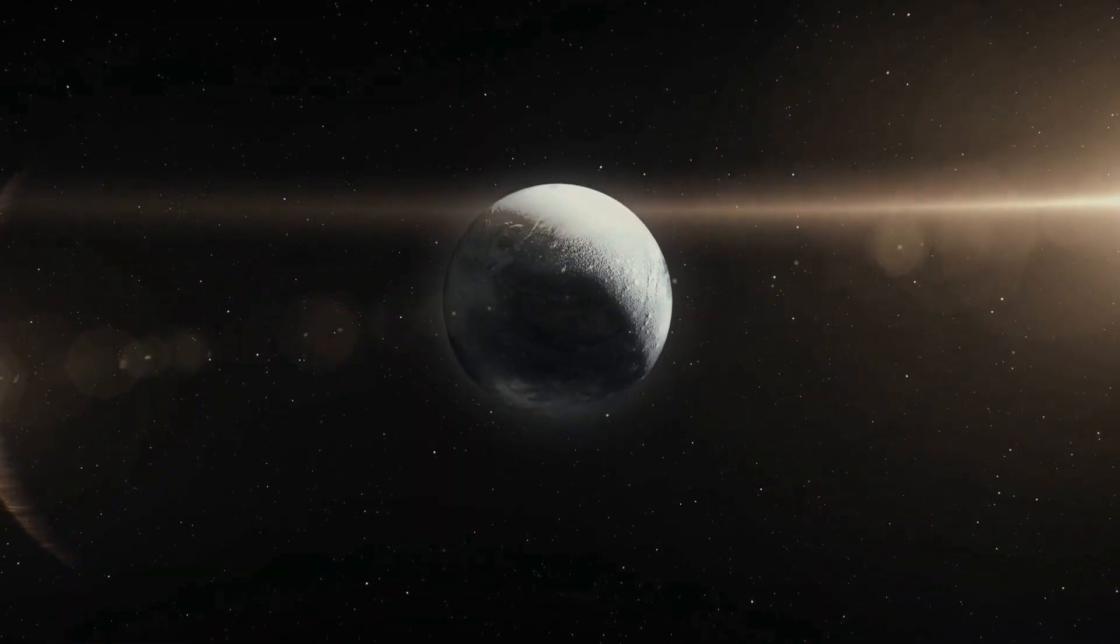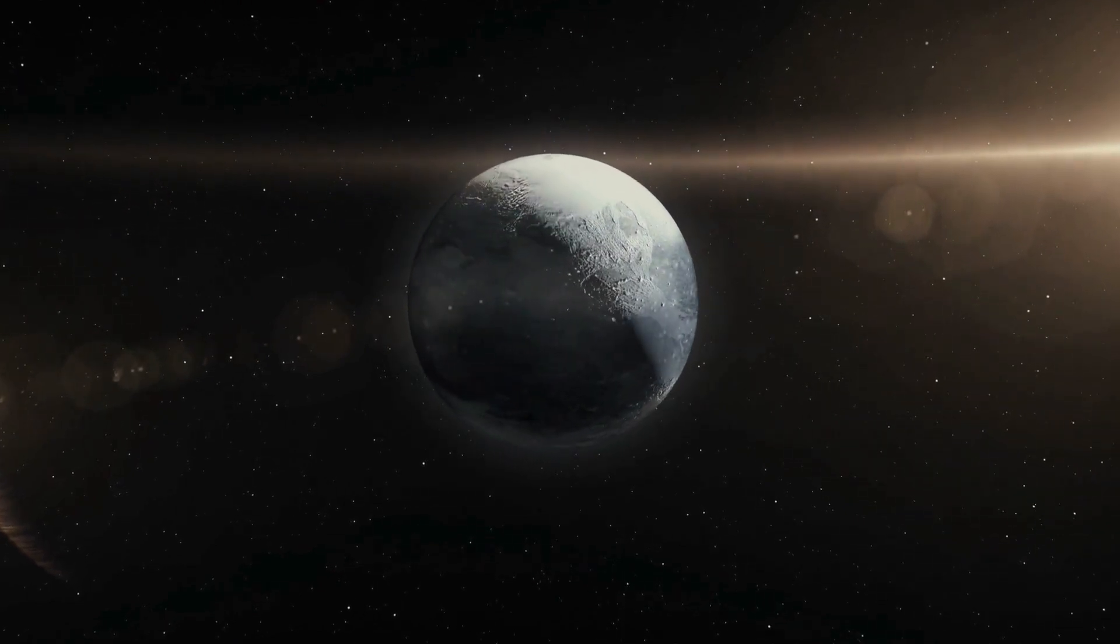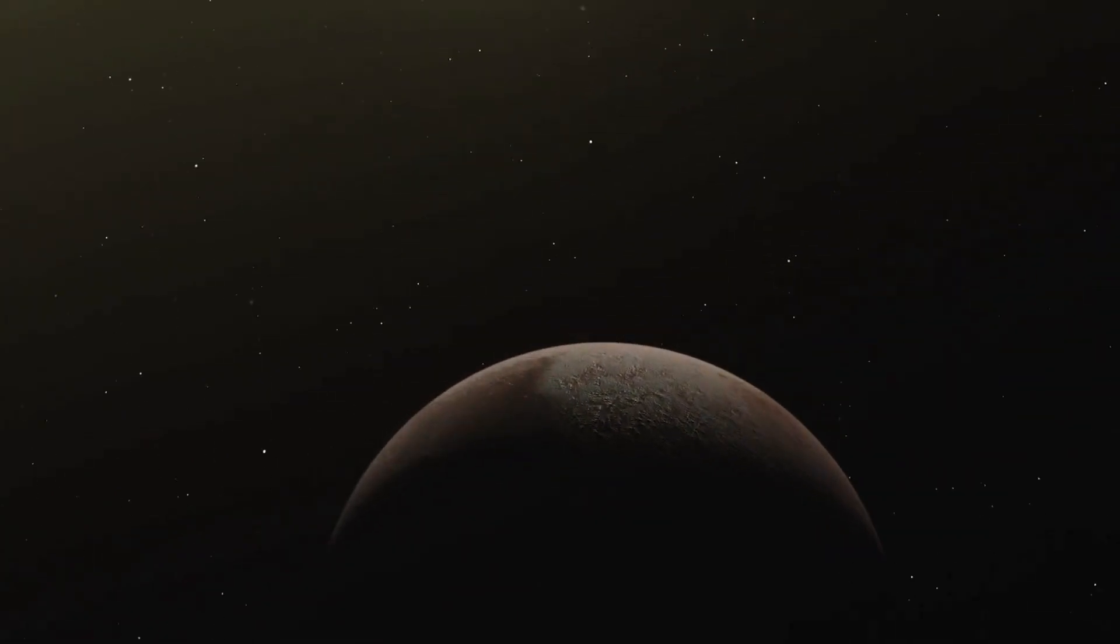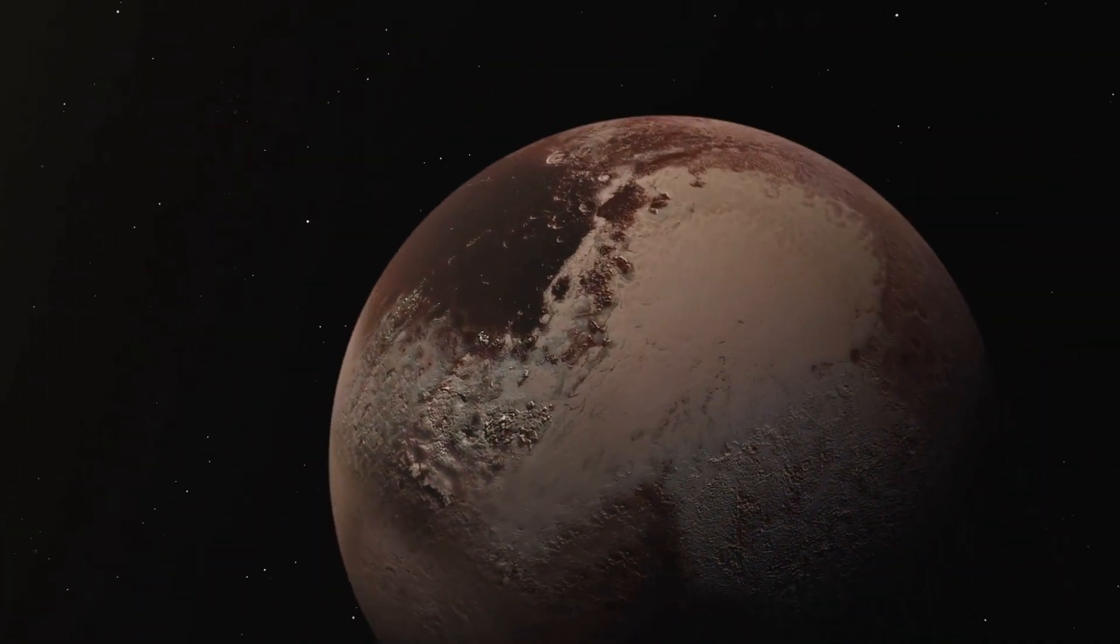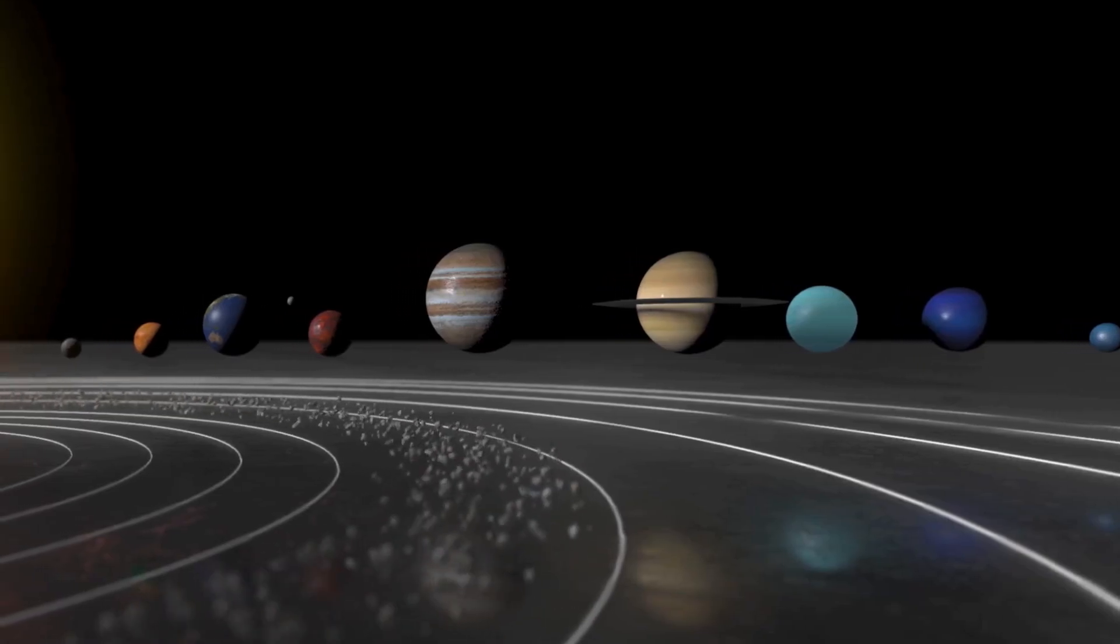The three-body problem in space is about figuring out how three objects, like Pluto, Neptune, and the Sun, move and influence each other with their gravity. It's like trying to predict where they will go based on where they start and how they pull on one another.